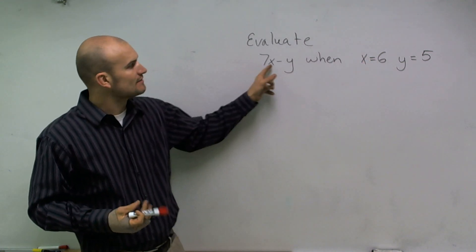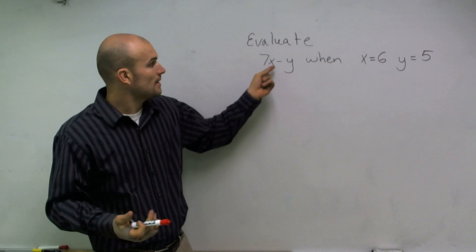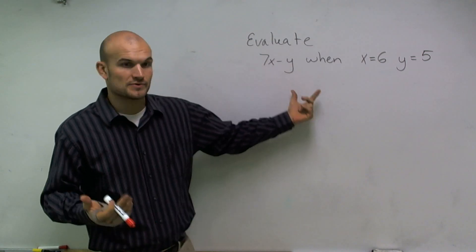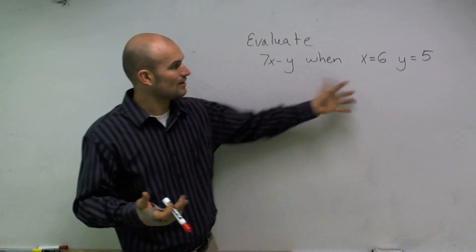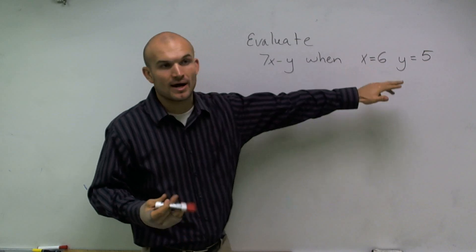The expression says 7 times the number x, which we don't know, minus another number y, which we don't know. But what if x equals 6 and y equals 5?